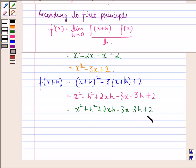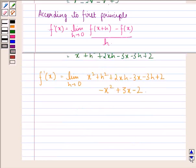We see that this remains as it is because there is no cancellation here. Now, let us find out f'(x). So, f'(x) is limit h approaching 0, function at x+h is x² + h² + 2xh - 3x - 3h + 2, minus f(x) will be minus x² + 3x - 2. This divided by h.